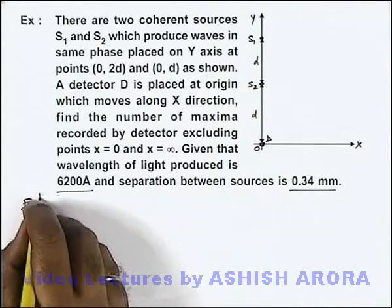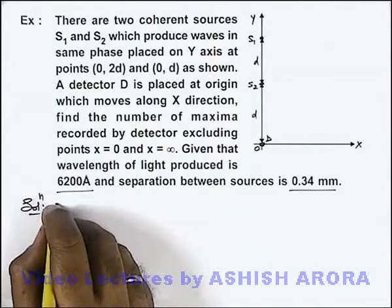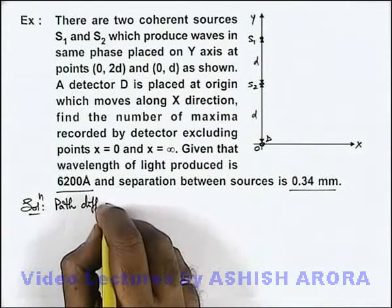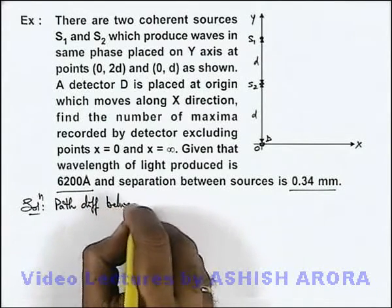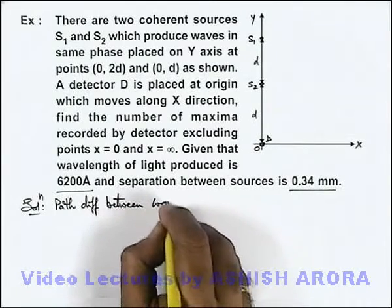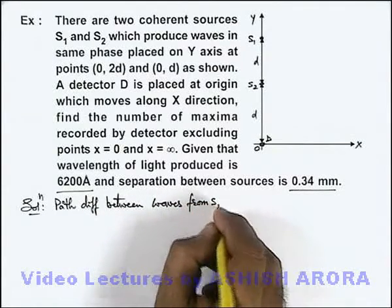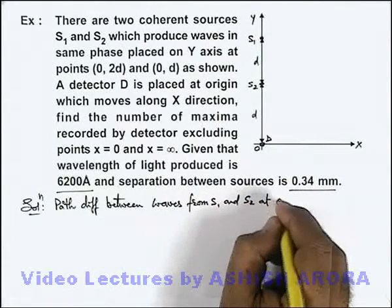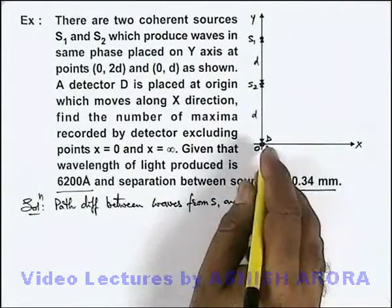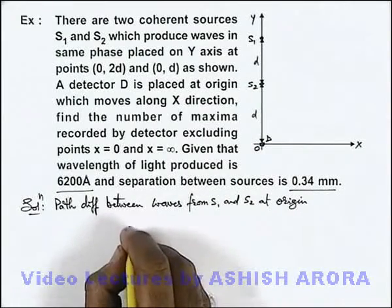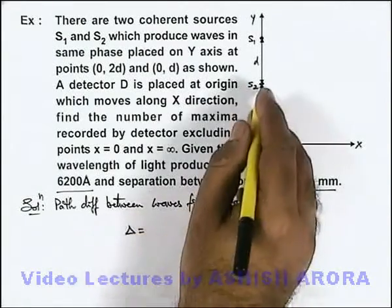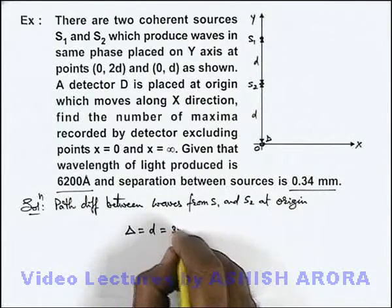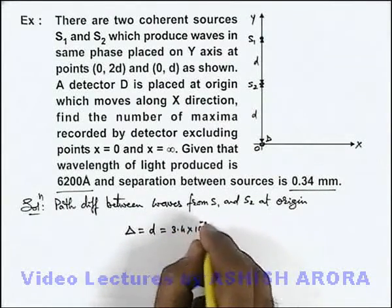Now in this situation, if we calculate the path difference between waves from S1 and S2 at origin, then this path difference we can directly write as d, that is 0.34 mm, that is 3.4 × 10^-4 meter.